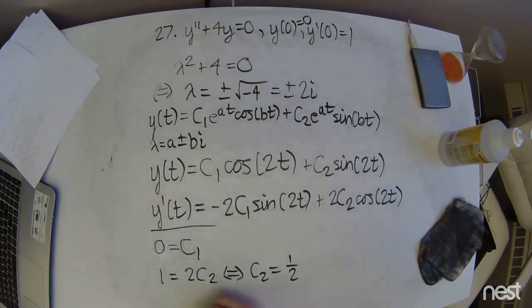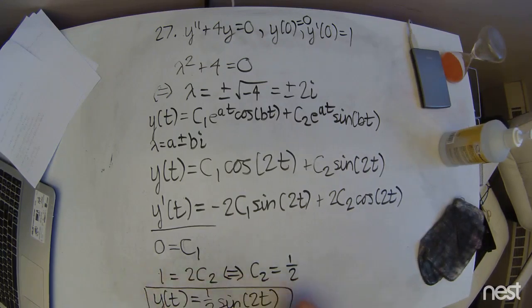And now we can actually write out the full solution. So we're going to get y of t equals, now since c1 is 0, it's just going to cancel out the cosine. So we're going to get 1 half sine of 2t. And that's the solution.